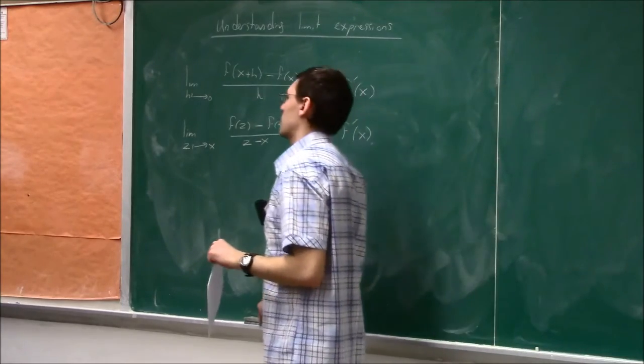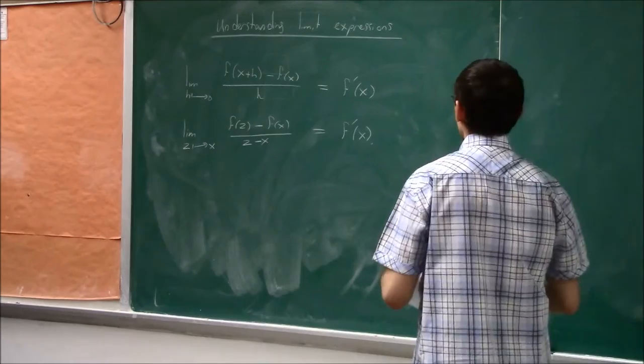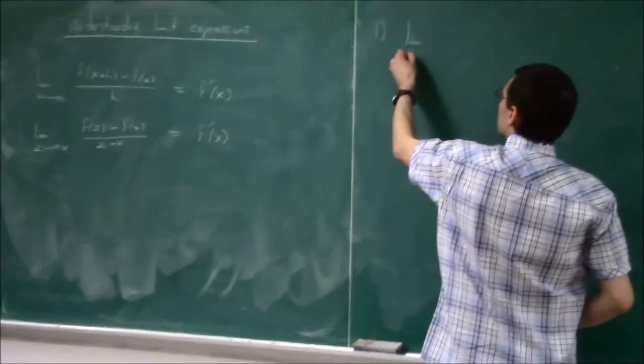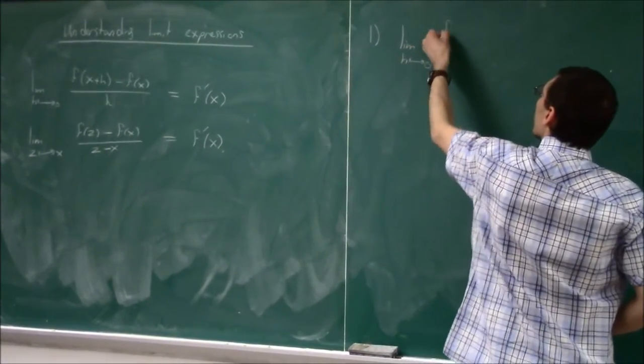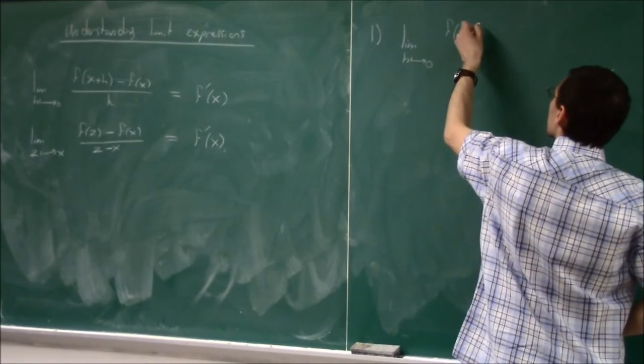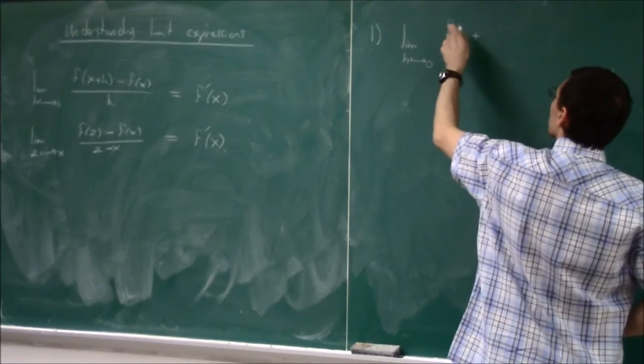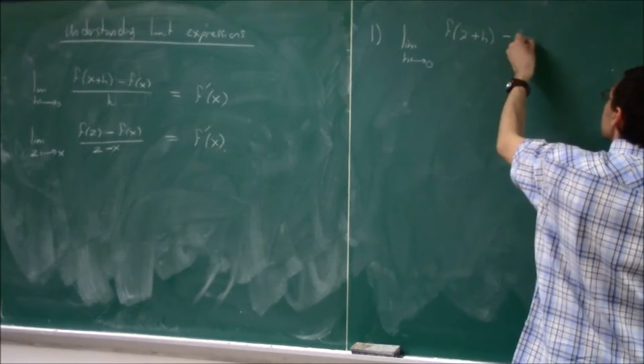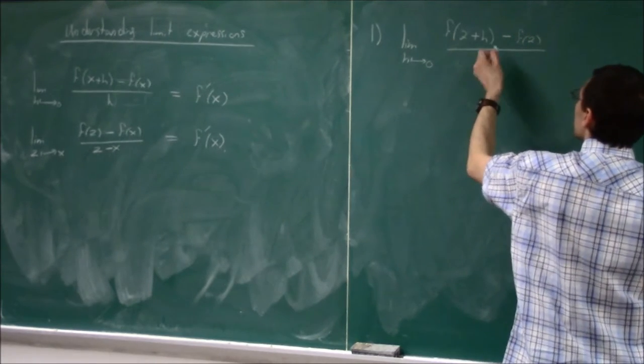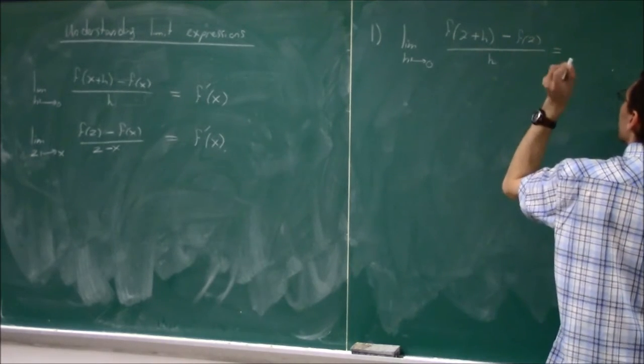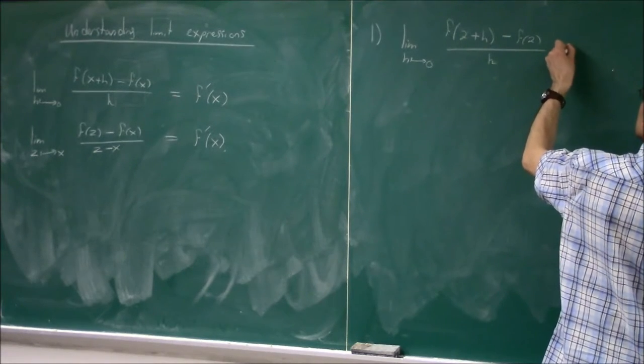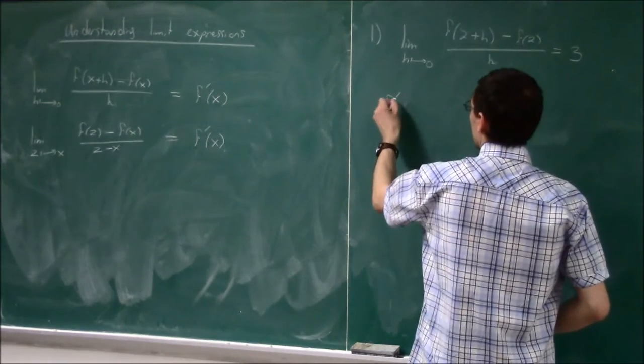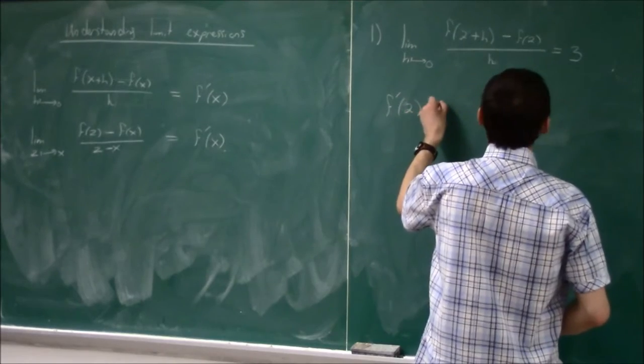So let's try to develop this ability to understand those limits. First, suppose we know that limit as h goes to 0 of f(2+h) - f(2) divided by h is equal to 3. So that means that some function, its derivative at 2 is equal to 3.